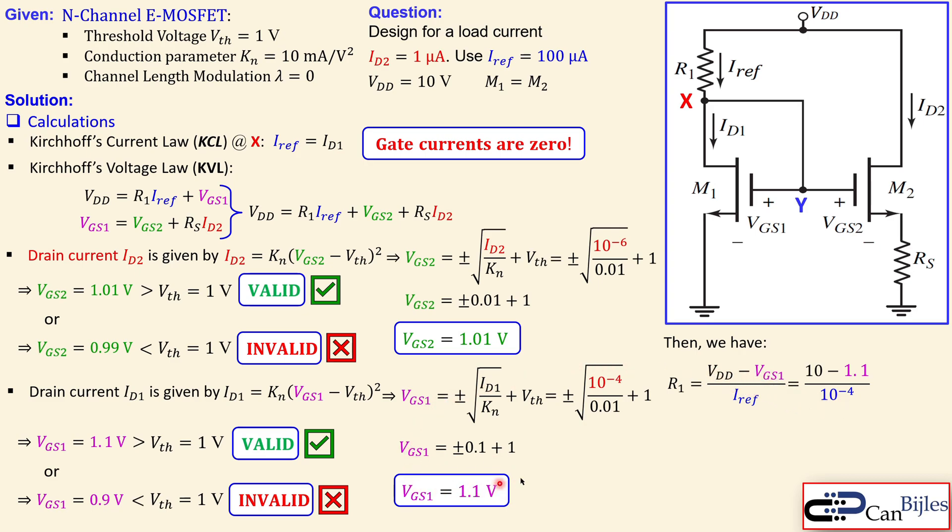Now we know Iref, we know VDD, we have already calculated VGS1, which is shown here. So we can now say this is then equal to 89 kilohms.